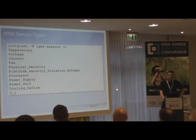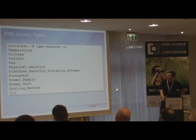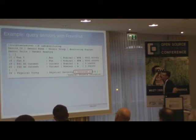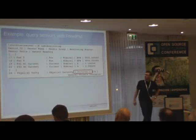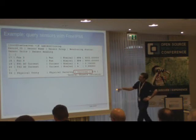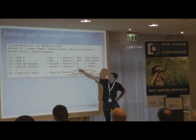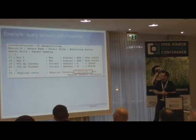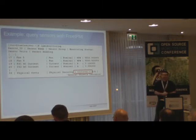We are using the FreeIPMI suite, which includes different tools. One of them is ipmi-sensors. Using the ipmimonitoring command we get a list of all sensors, and the nice thing is that the fourth column tells us whether each sensor is fine or not — 'nominal' means everything is fine, anything different indicates a problem. This was the starting point for the plugin, because this output is really good for parsing and feeding information into Icinga or Nagios. We can also see a physical security sensor with state 'critical' because chassis intrusion has been detected.